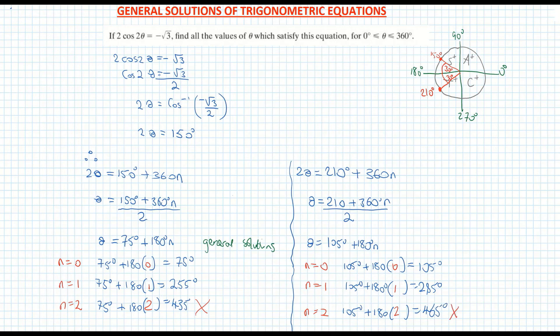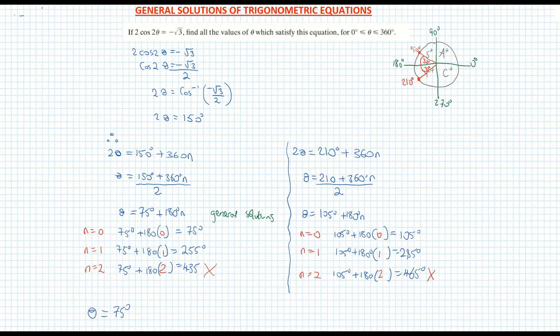So my solutions, my final values for theta, 75 degrees, 105 degrees, 255 degrees and 285 degrees, because they are all between zero and 360 degrees.